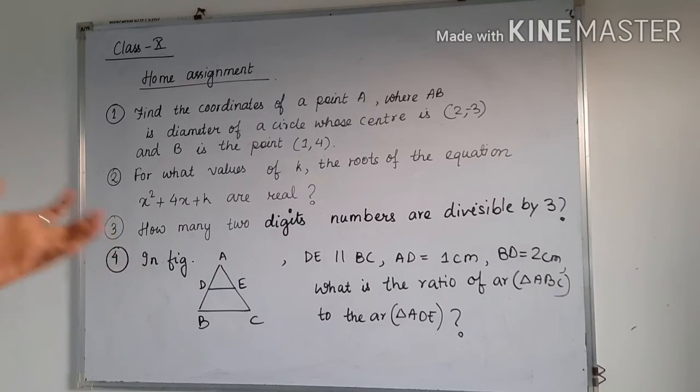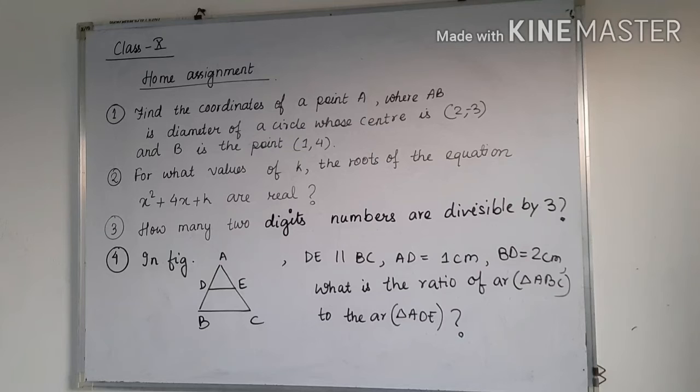Number 3 is how many 2-digit numbers are divisible by 3? So first of all, you have to find all the 2-digit numbers. You have to make a sequence which are divisible by 3. You have to make a sequence and like that you have to apply the formula which we have studied in arithmetic progression. So try to do it.